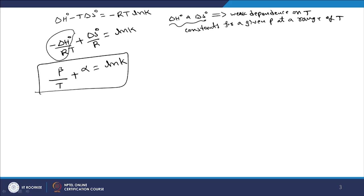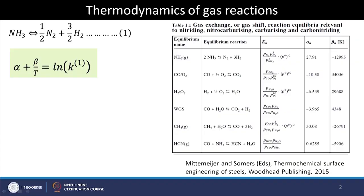These values are already measured and tabulated for most important reactions, as can be seen in this table. For the details one can refer to this source — it is an edited book with Mittemeijer and Somers as editors, containing all the fundamental information as well as the applied knowledge essential for practitioners. For different reactions involving gases — such as the dissociation of ammonia and the oxidation of carbon monoxide — the corresponding values of alpha and beta are already available from literature, and one can use those to calculate the equilibrium constant.